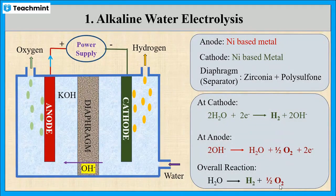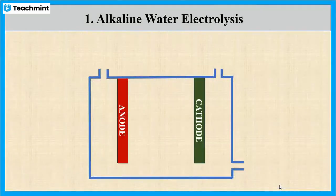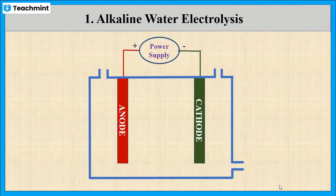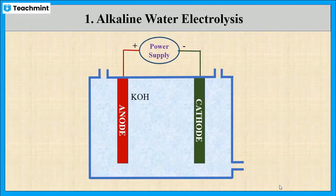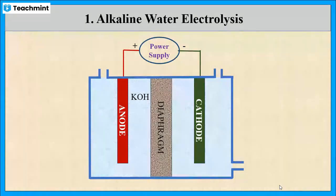Once again, I will summarize. This electrolyzer contains two nickel electrodes, anode and cathode, connected to power supply. The electrolyte is potassium hydroxide and the two electrodes are separated by a diaphragm.